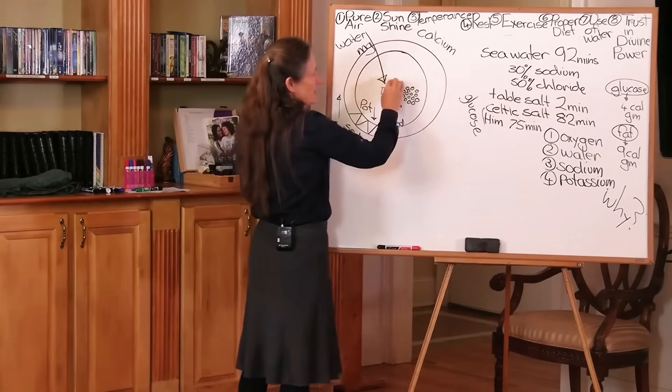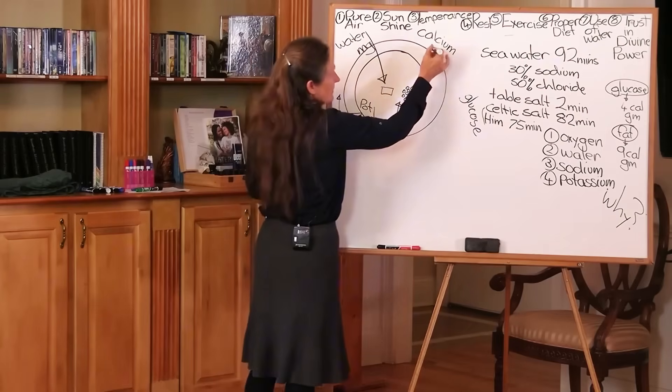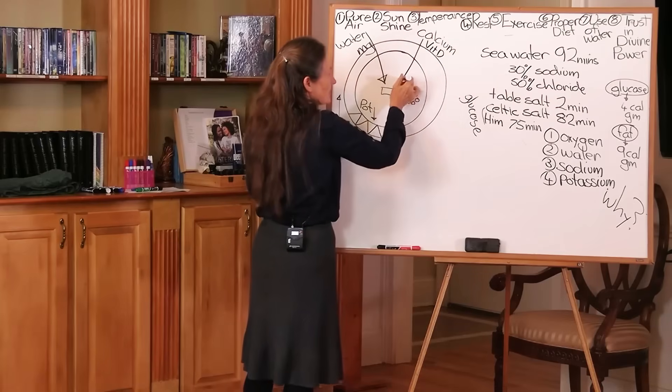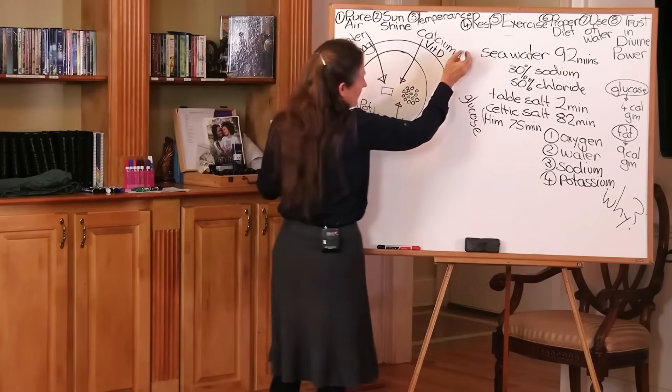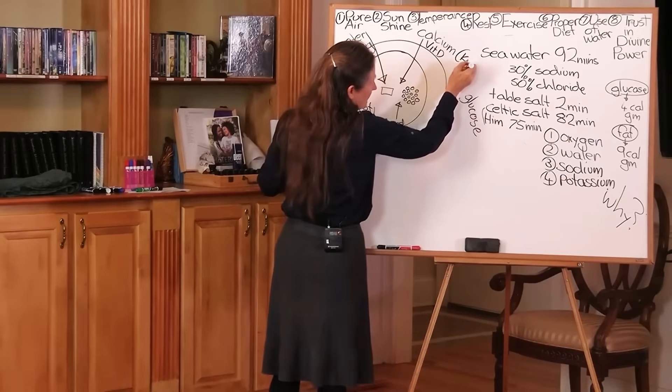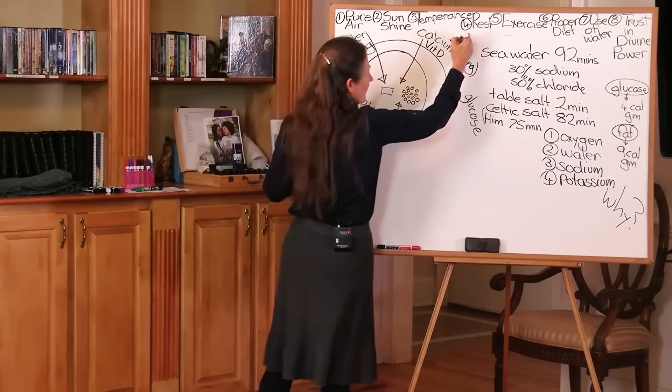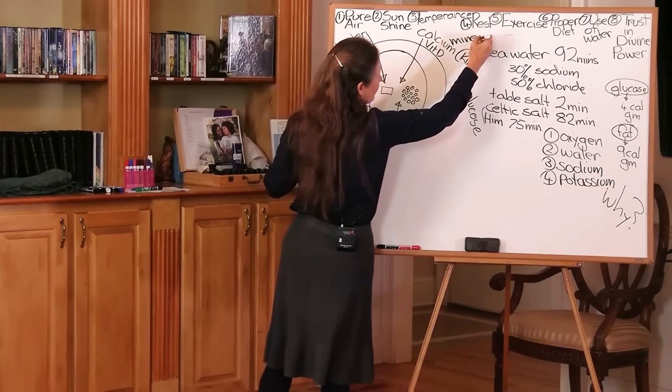Calcium cannot get into the cell by itself. It needs vitamin D. When vitamin D is present, the calcium is pulled inside the cell. And remember I showed you the other day that calcium is called the king because when it gets into the cell, all the other minerals piggyback on the back of calcium.